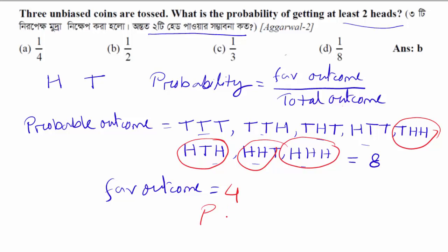So, the probability — if we have the favorable outcome over the total outcome, that gives us 5 over 8... which the speaker states as half. So, the answer is half. The option is correct.